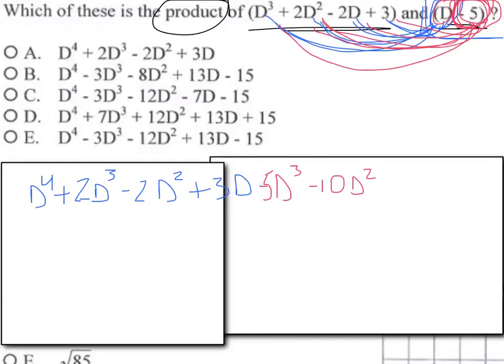Next one: negative 2D times negative 5 is positive 10D. Negative times a negative equals a positive. And 3 times negative 5 is negative 15.